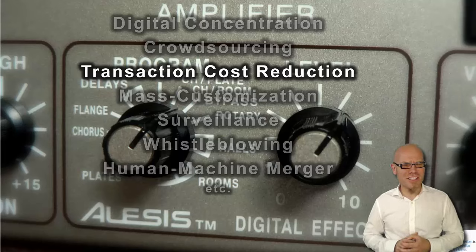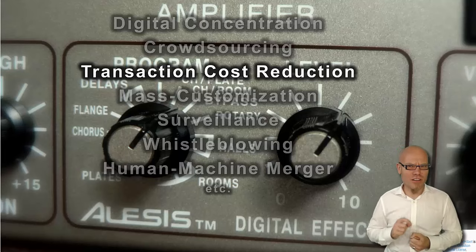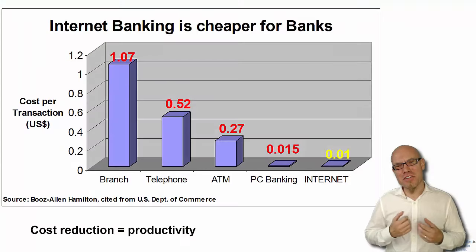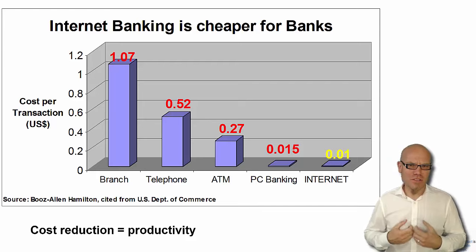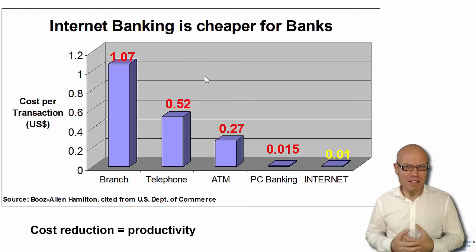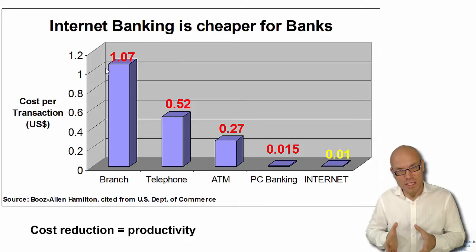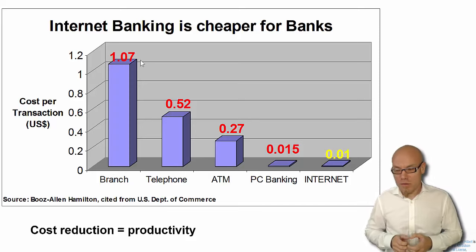One important effect of the characteristics of digitalization is the reduction of transaction costs. What do we mean by that? You can really think of it as transaction costs. For example, if you go to the bank and you want to make a transaction — you want to send money to somebody and you go into the branch and talk with a bank clerk sitting there behind the window — it costs the bank about a dollar to execute this transaction, because there are a lot of transaction costs involved.